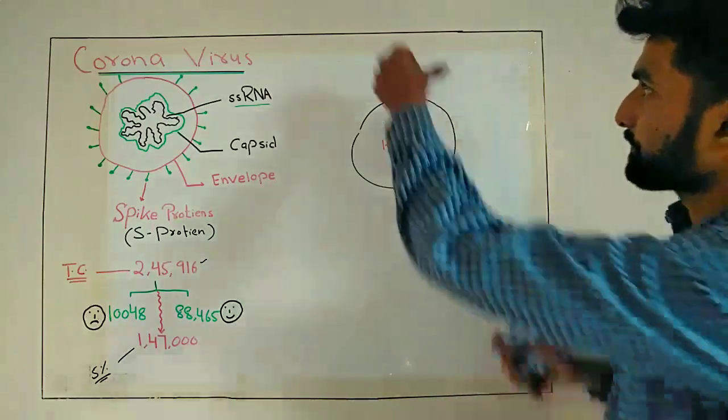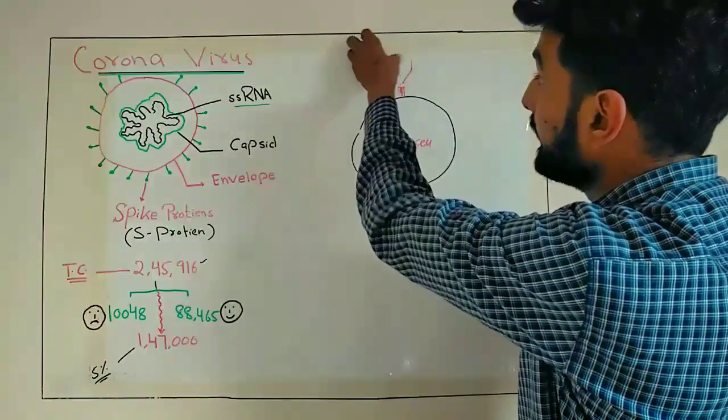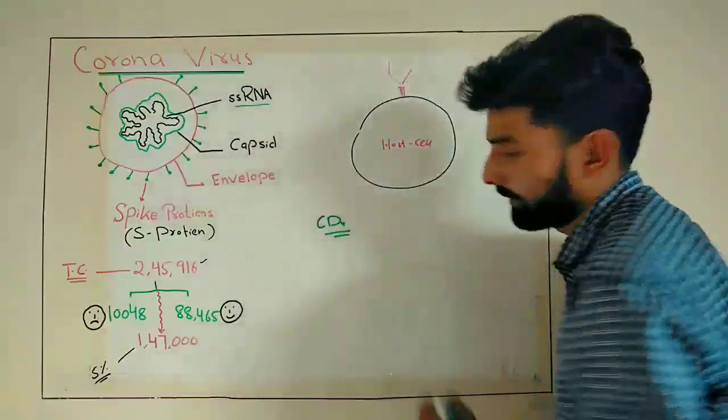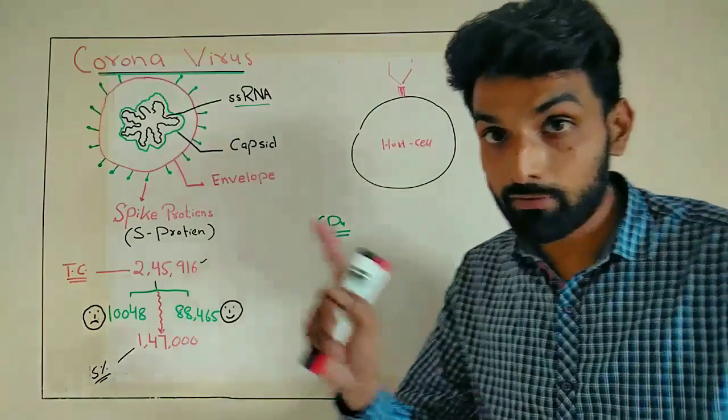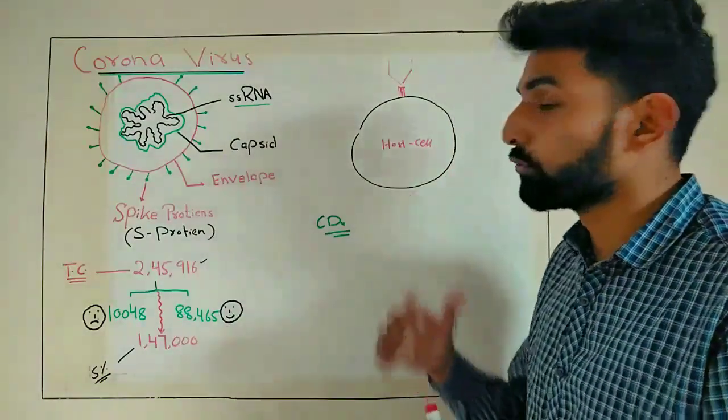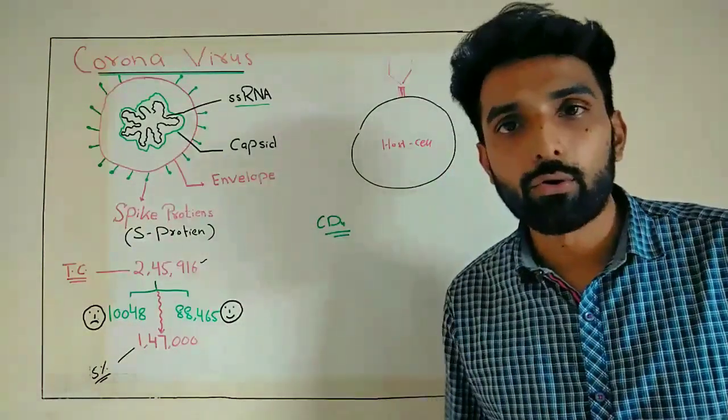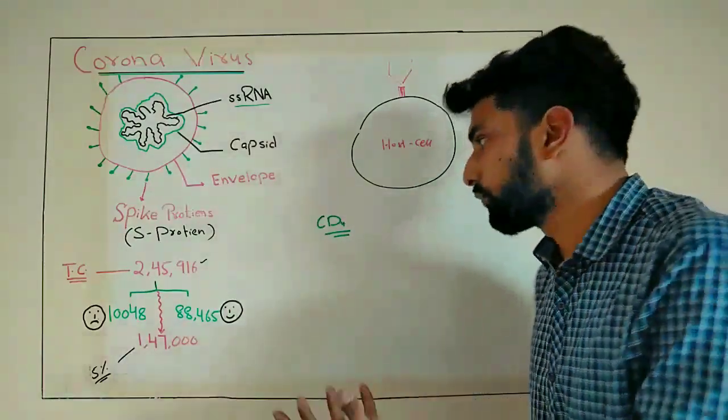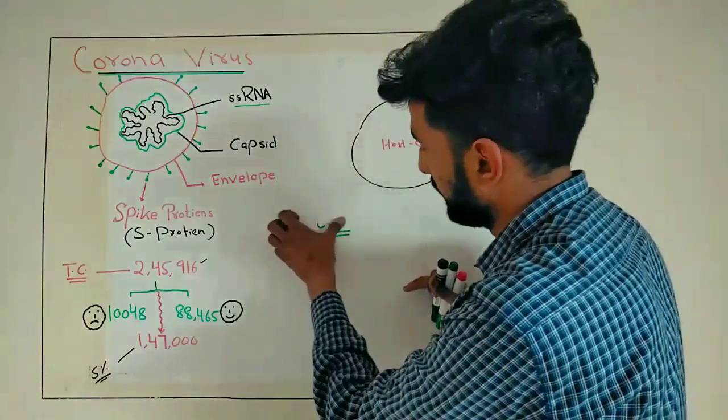Similarly, T helper, the CD4 receptor that is present on the T helper cell, is used by the HIV virus to get into our cell.